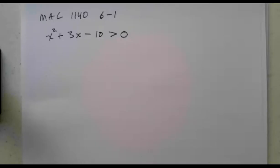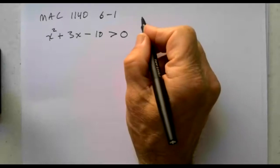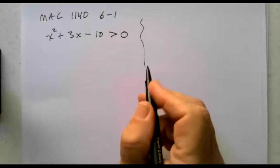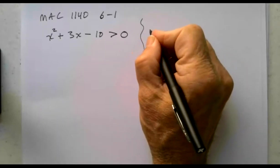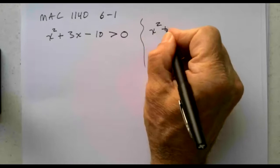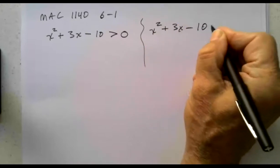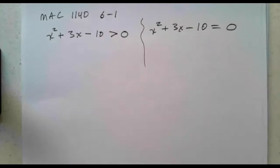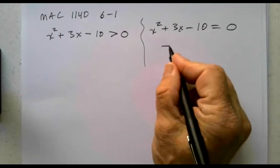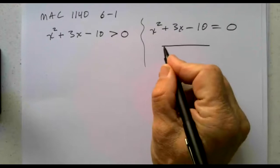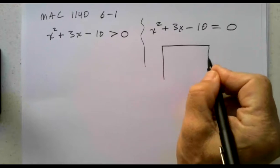This question is the inequality x squared plus 3x minus 10 is greater than 0. The way to solve this algebraically is to solve it as an equation: x squared plus 3x minus 10 equals 0. We could use the quadratic formula or completing the square, but factoring would be the simplest strategy here.